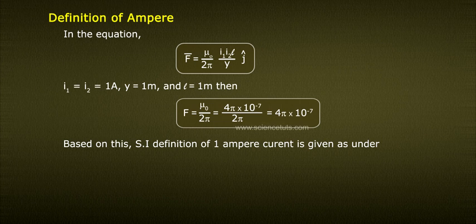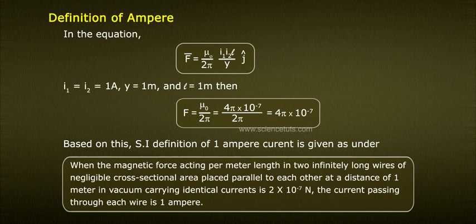Based on this, SI definition of 1 ampere current is given as under. When the magnetic force acting per meter length in two infinitely long wires of negligible cross-sectional area placed parallel to each other at a distance of 1 meter in vacuum carrying identical currents is 2 into 10 power minus 7 N, the current passing through each wire is 1 ampere.